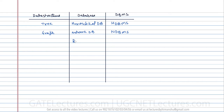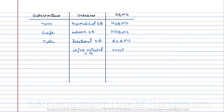Then we have a relational database, also called RDBMS, and its underlying data structure is tables. Then we have an object-oriented database, also called OODBMS, and the underlying data structures are objects as well as tables.